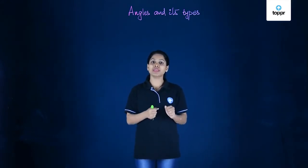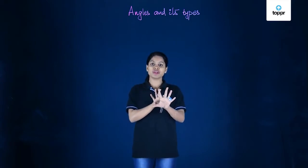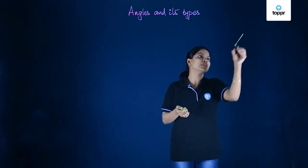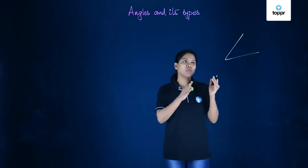All around us we see angles. For example, when you look at the space between your fingers, the space between the fingers is an angle. So if you would like to draw it here, it looks something like this. Now what is this exactly?